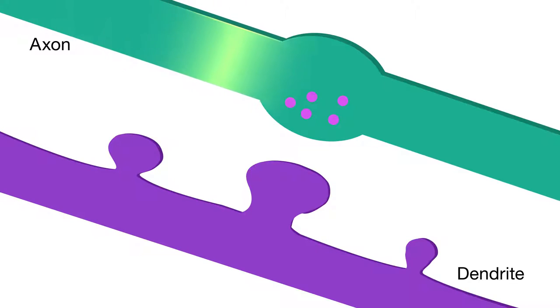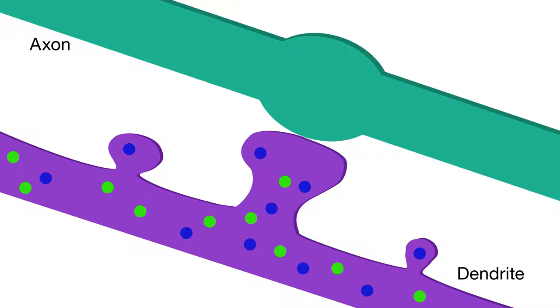When lots of messages are being passed and a spine is very active, it gets bigger. Many proteins need to be activated to make spines grow.